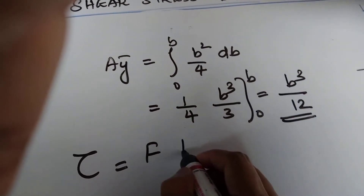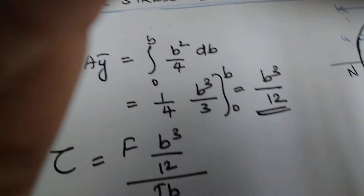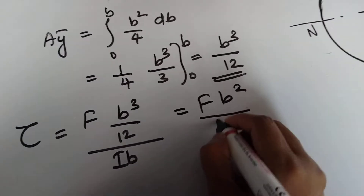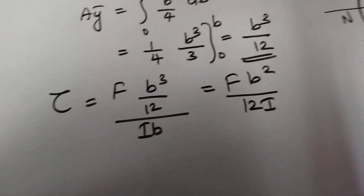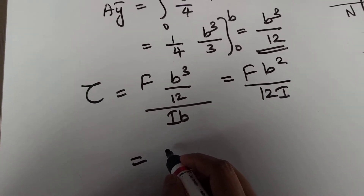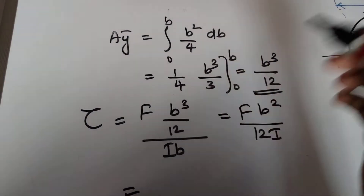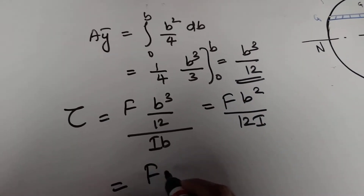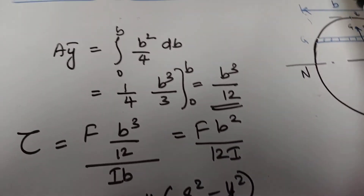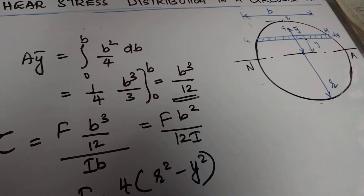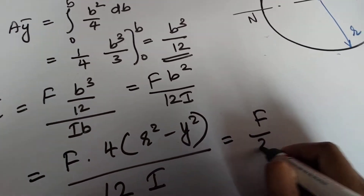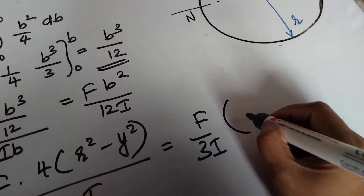Integrating and putting in the limits gives (1/4)·(b³/3) evaluated from 0 to b, which equals b³/12. Substituting this into the shear stress equation: τ = F·(b³/12) / (I·b) = F·b²/12I. Now substituting b² = 4(r² - y²), we get τ = F·4(r² - y²) / (12I) = F/3I·(r² - y²).